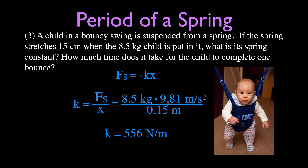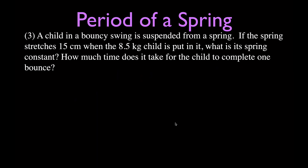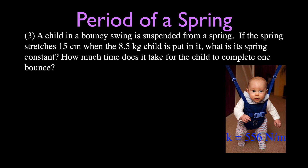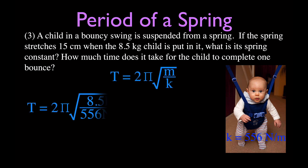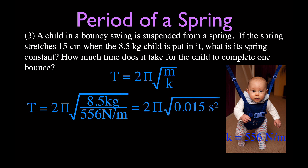Now we can calculate the period using the same spring equation with the values we have. Plugging in: 8.5 divided by 556 is 0.015. Taking the square root and multiplying by 2π, the period is 0.78 seconds for one bounce of the child.